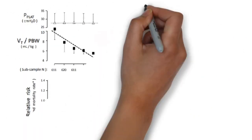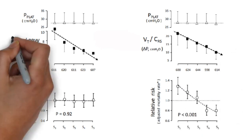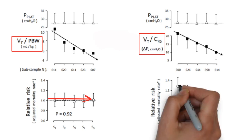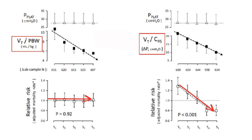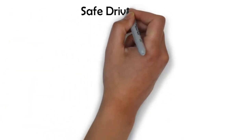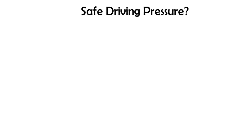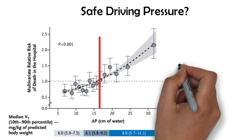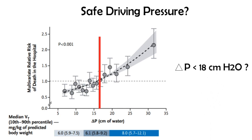Looking at this another way, from the same paper: reducing tidal volume as determined by ideal body weight did not really affect mortality, while decreasing tidal volume scaled to the compliance of the respiratory system directly correlated with reductions in mortality. As for what's a safe driving pressure — we don't know for sure, but we have an educated guesstimate. Mortality and driving pressure have a linear relationship, so there is no truly safe driving pressure. However, the risk of mortality greatly increases when driving pressure gets above 16 cm of water, while a more recent study by Villar et al suggests that up to 18 cm of water may be safe.